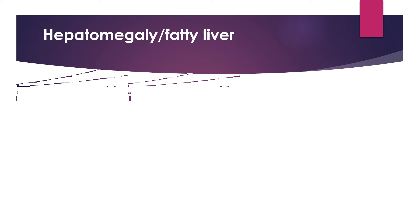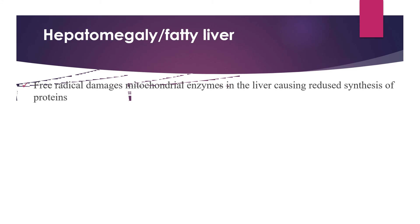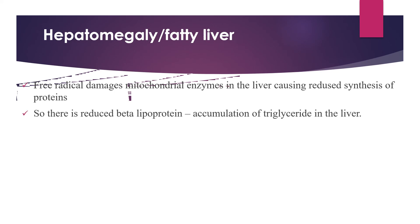Hepatomegaly or fatty liver occurs due to free radical damage to mitochondrial enzymes in the liver, causing reduced synthesis of proteins, including beta-lipoprotein. Reduced beta-lipoprotein level causes accumulation of triglycerides in the liver due to lack of triglyceride breakdown, leading to hepatomegaly.